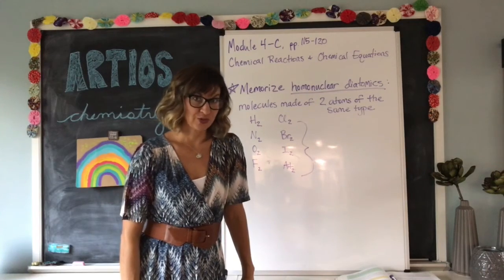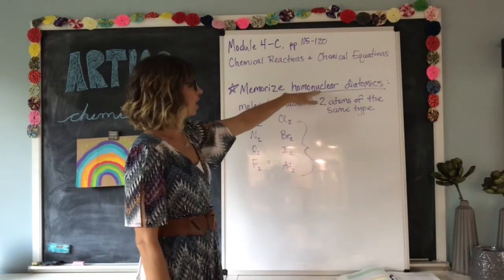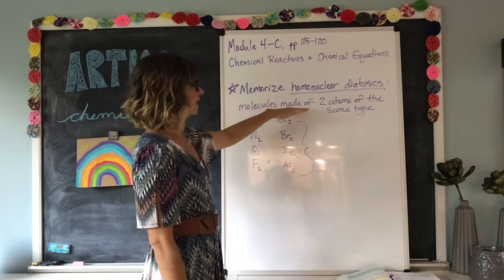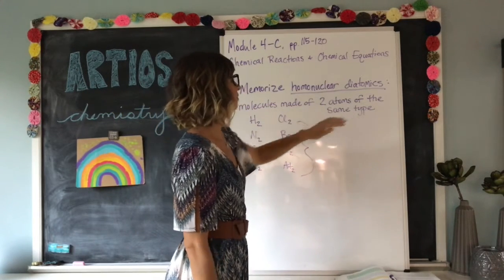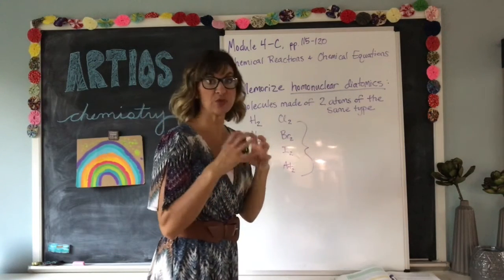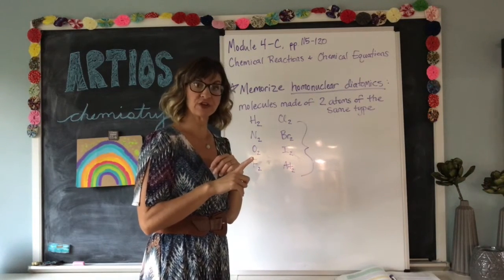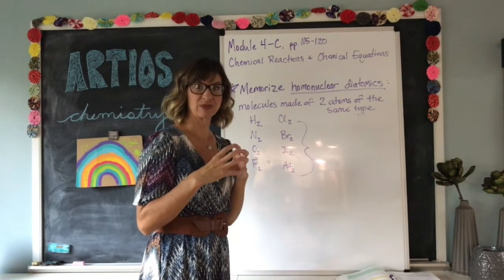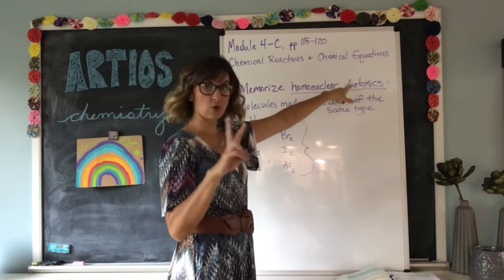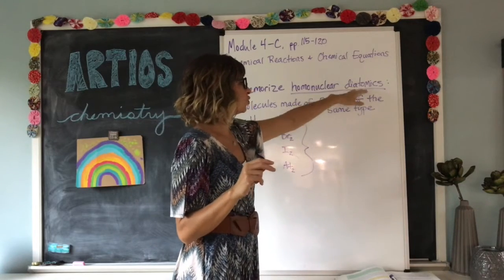Something more to memorize: the homonuclear diatomics. These are molecules made of two atoms of the same type. 'Homo' means same, 'nuclear' refers to the nucleus of the atom where the type of atom is determined, and 'di' of course means two. So homonuclear diatomics are two of the same type of atom.